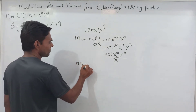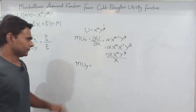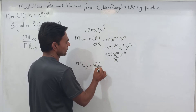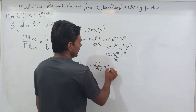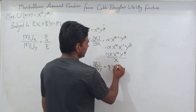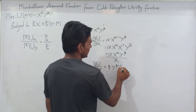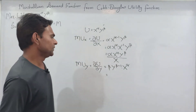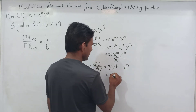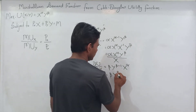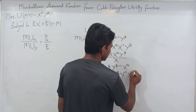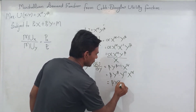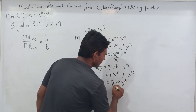Now we calculate the marginal utility of y by taking the partial derivative of the utility function with respect to y. This gives beta times y to the power (beta minus 1) times x to the power alpha, which can be rewritten as beta times x to the power alpha times y to the power beta divided by y.